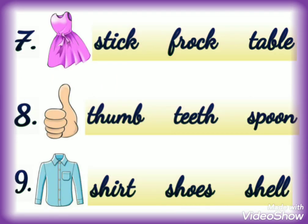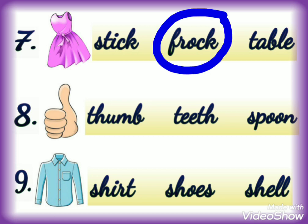This is the picture of frog. We have 3 options, we will read them one by one. First option is S-T-I-C-K, stick — this is not the right answer. The next option is F-R-O-G, frog — yes, this is the right answer, so we will circle this word. The third option is T-A-B-L-E, table — this is also not the correct answer. So we'll go to the next number.